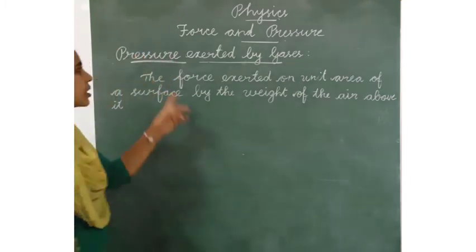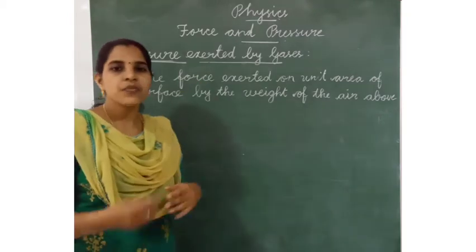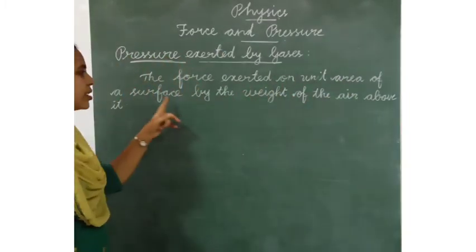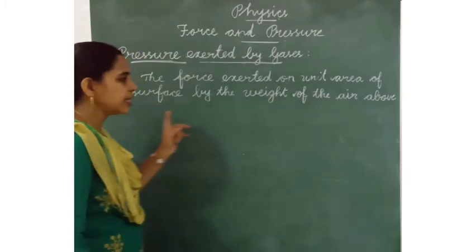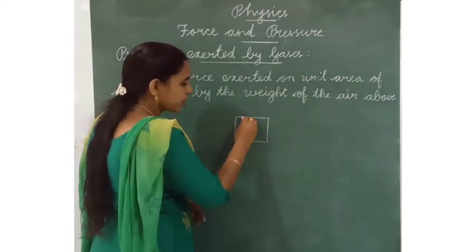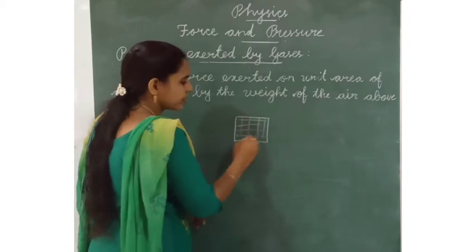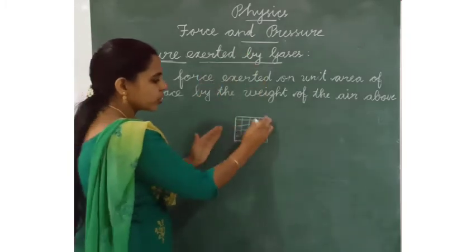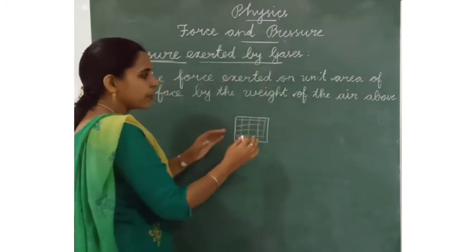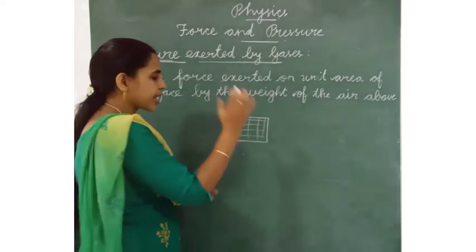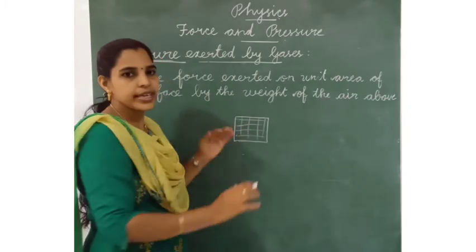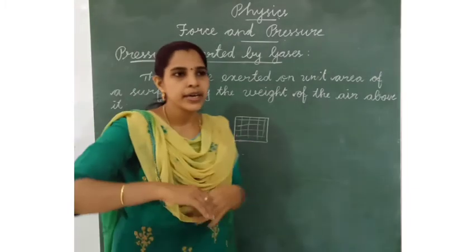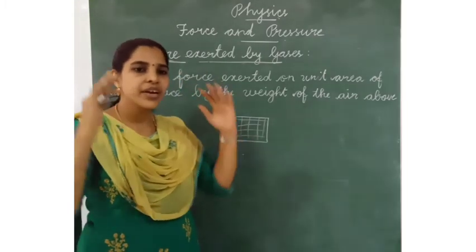The pressure exerted on the earth from the atmosphere is called atmospheric pressure. The force exerted on the unit area of a surface by the weight of the air above it. For example, this is the unit area of the surface. The force is exerted on this unit area by the weight of air. That is called atmospheric pressure. When we compare with space, space will have very less air pressure.